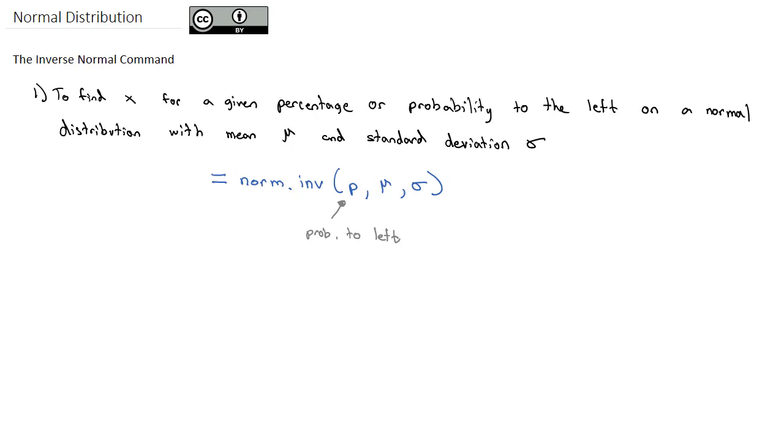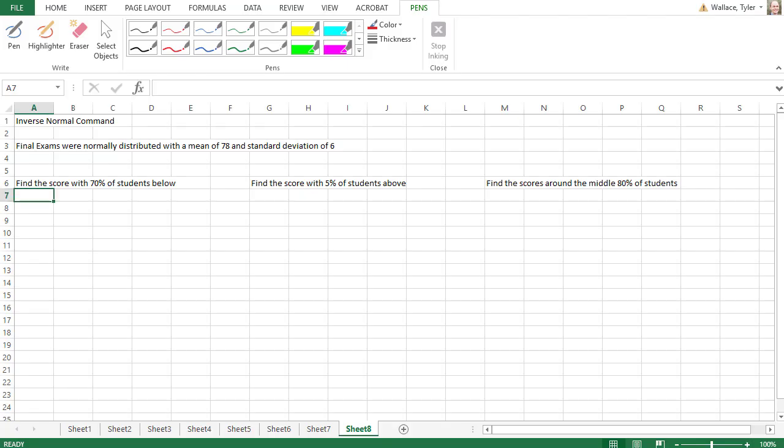Let's take a look at what this looks like on Excel to work some examples. We've been working with these final exam test scores that were normally distributed with a mean of 78 and a standard deviation of 6. We want to find the score that has 70% of students below it.